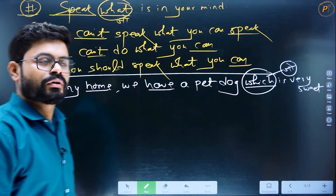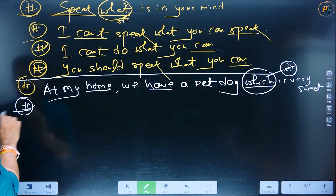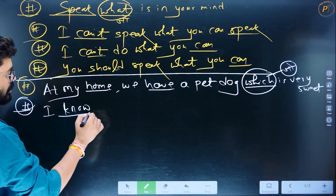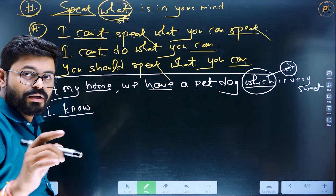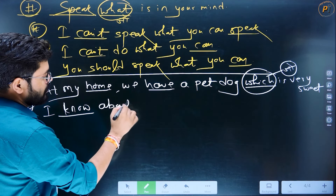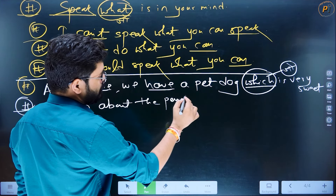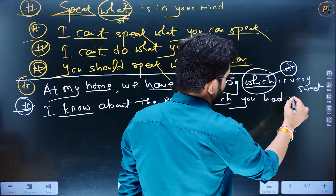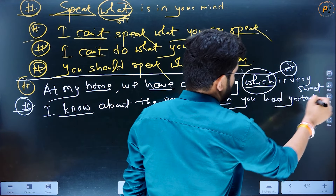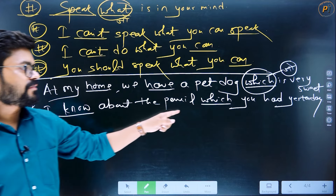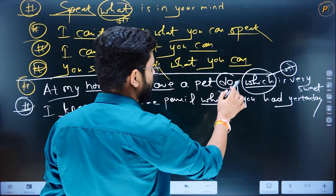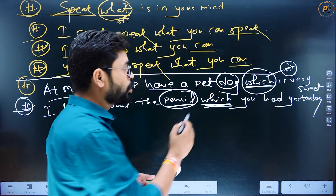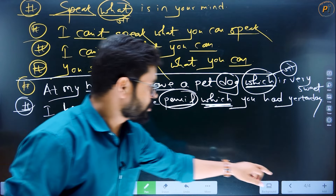Which is very sweet — 'which' ka matlab 'jo' ja raha hai. I know about the pencil which you had yesterday. So you can see — for the dog and for the pencil, which is a non-living object, we use 'which' in both cases.